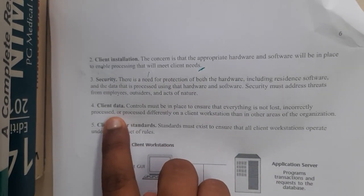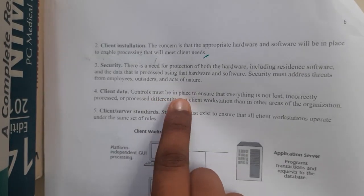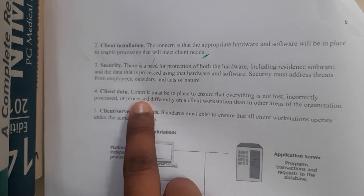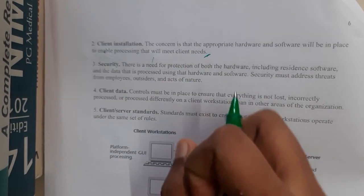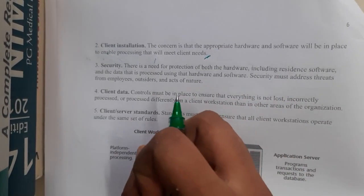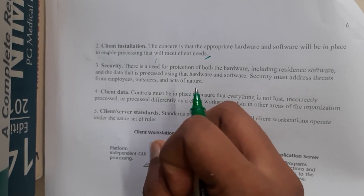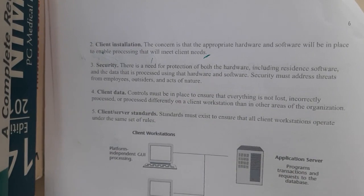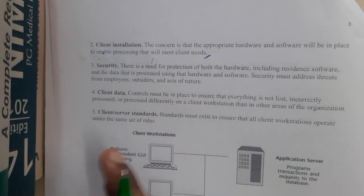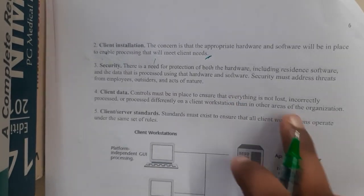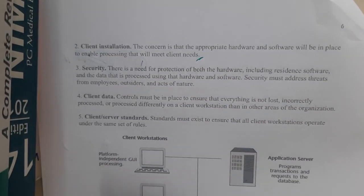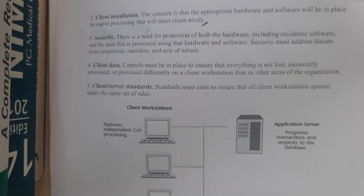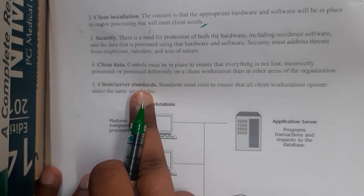The fourth concern is client data. Controls must be in place to ensure that nothing is lost or incorrectly processed. Whatever client data you collect and store should be secured properly with no loss. For example, if a company asks for your Aadhaar number repeatedly every month due to technical issues, it is indirectly losing data, which could end up in someone else's hands — which is very dangerous.